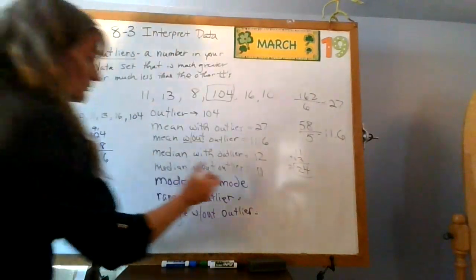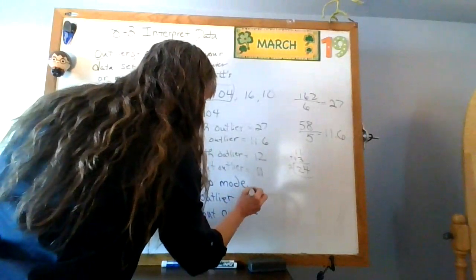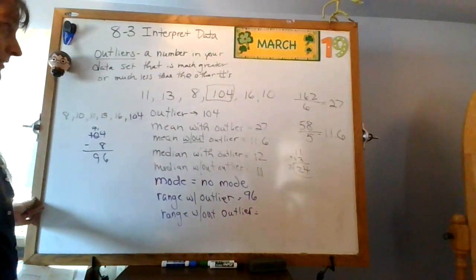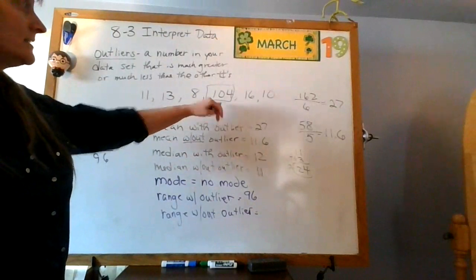All right, 14 minus 8 is, so the whole thing is 96. So range with my outlier is 96. Pretty big range, right? The difference between 8 and 104.